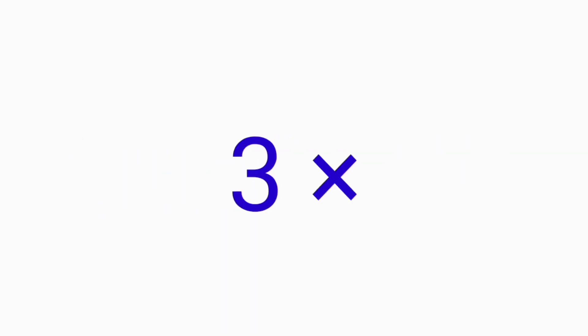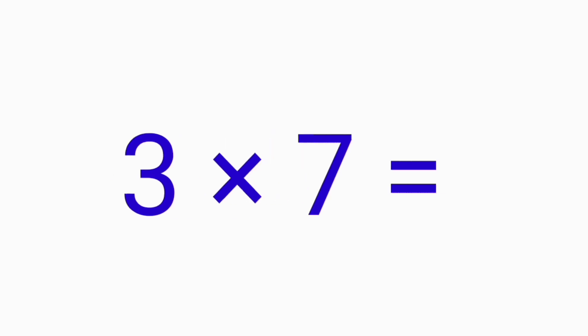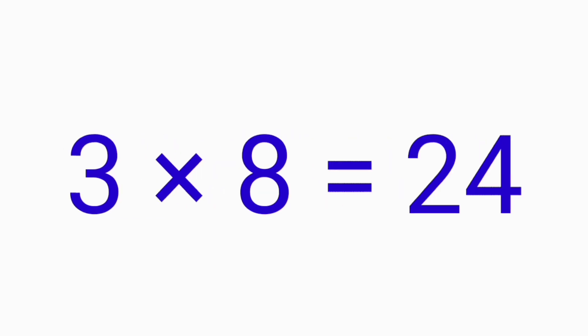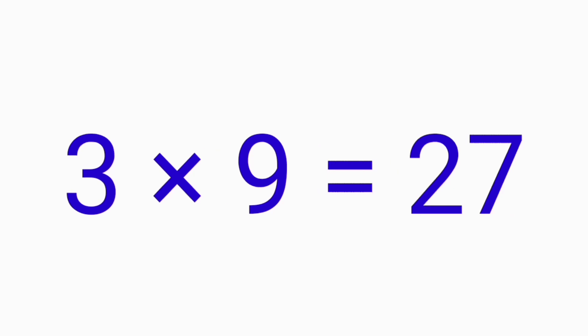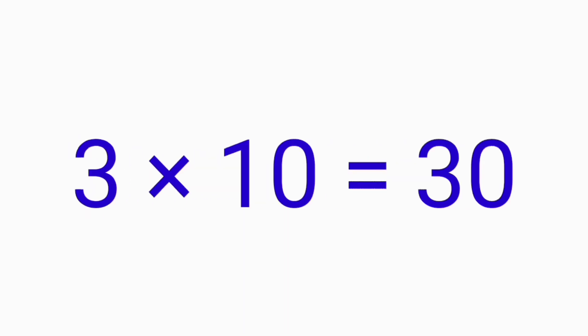Three sixes are eighteen. Three sevens are twenty-one. Three eights are twenty-four. Three nines are twenty-seven. Three tens are thirty.